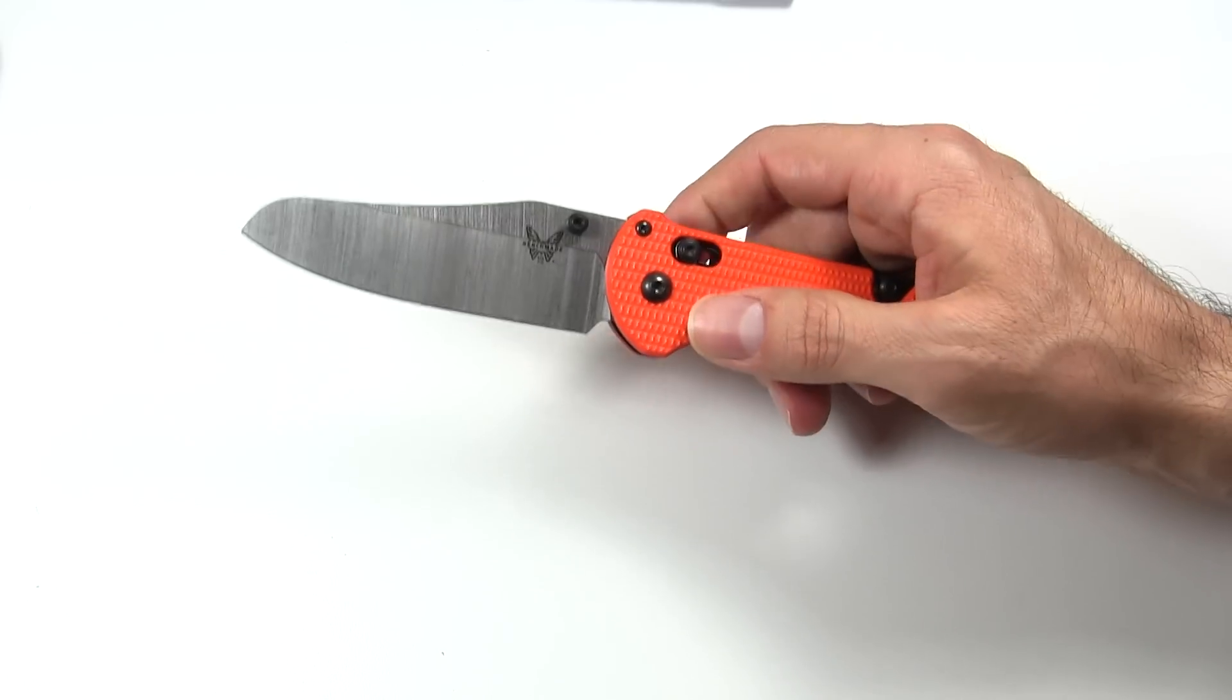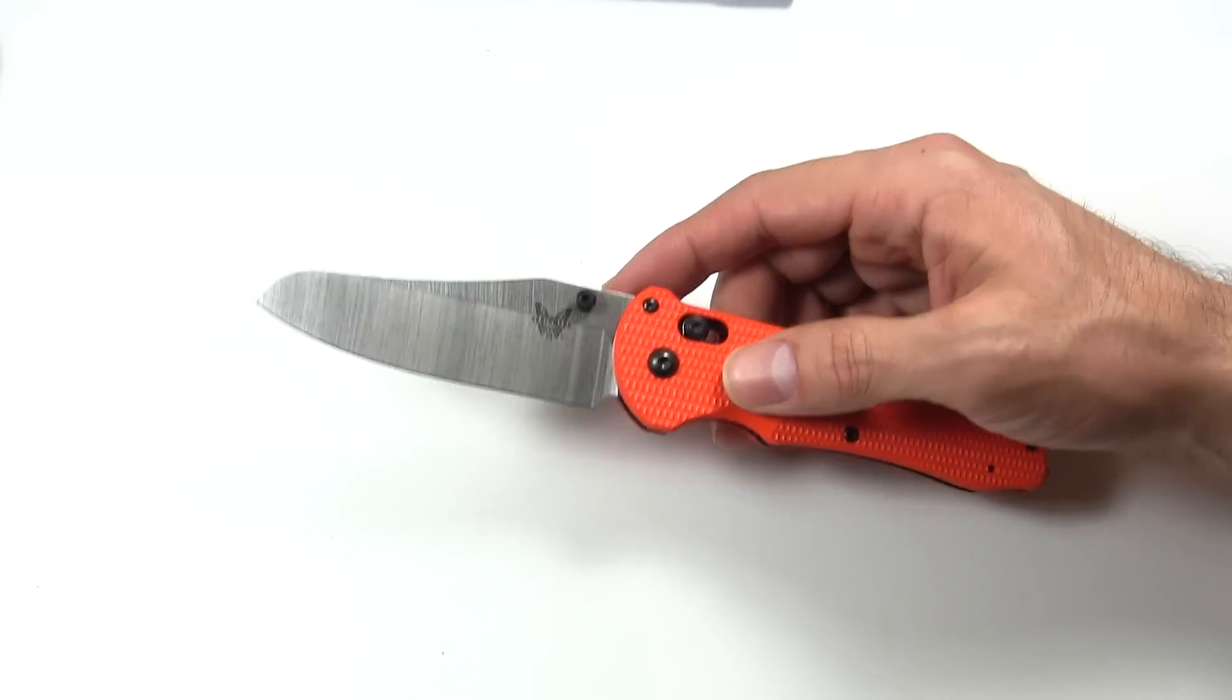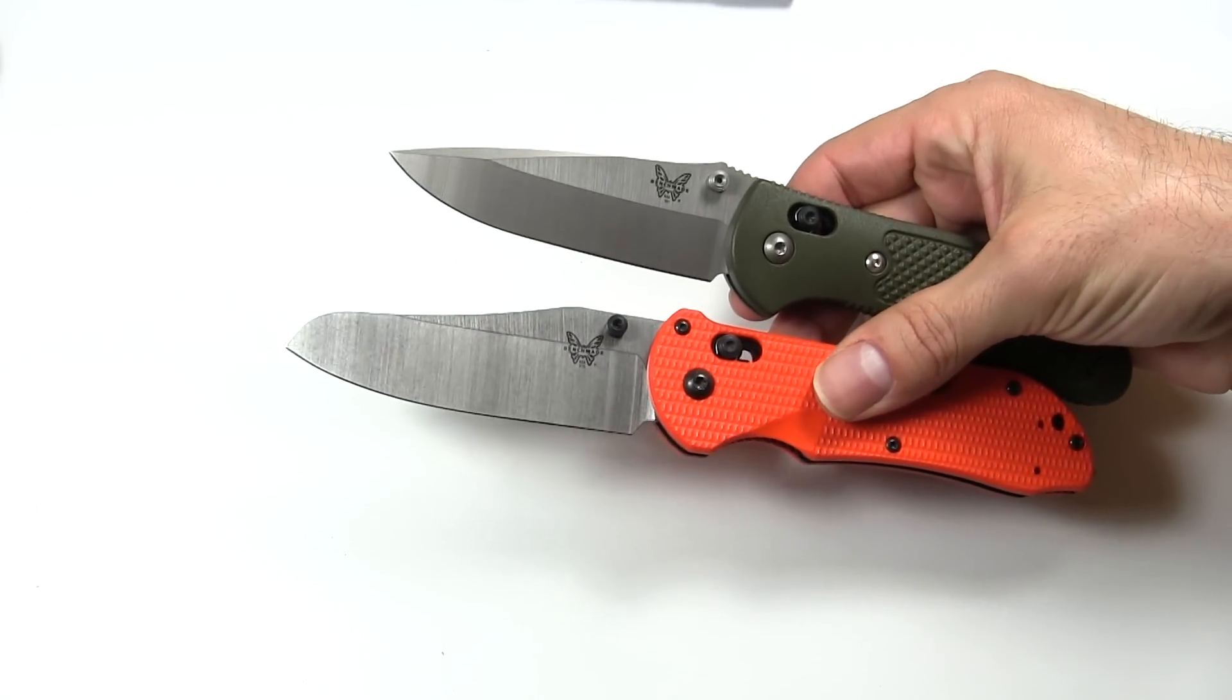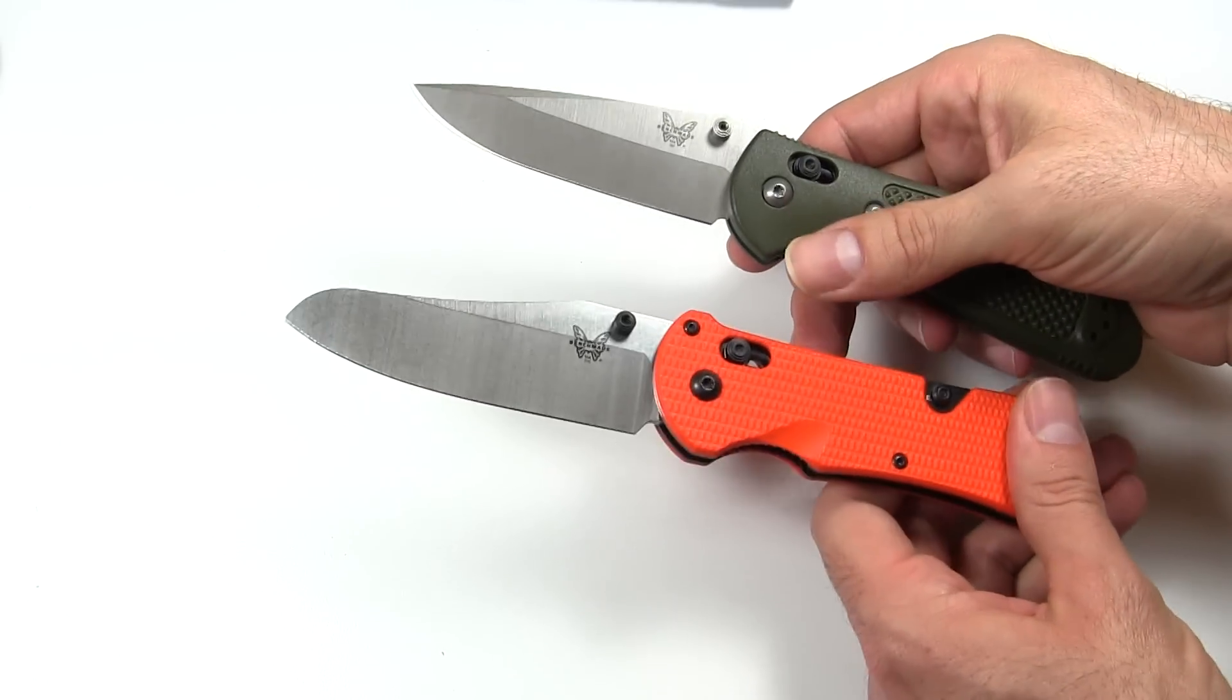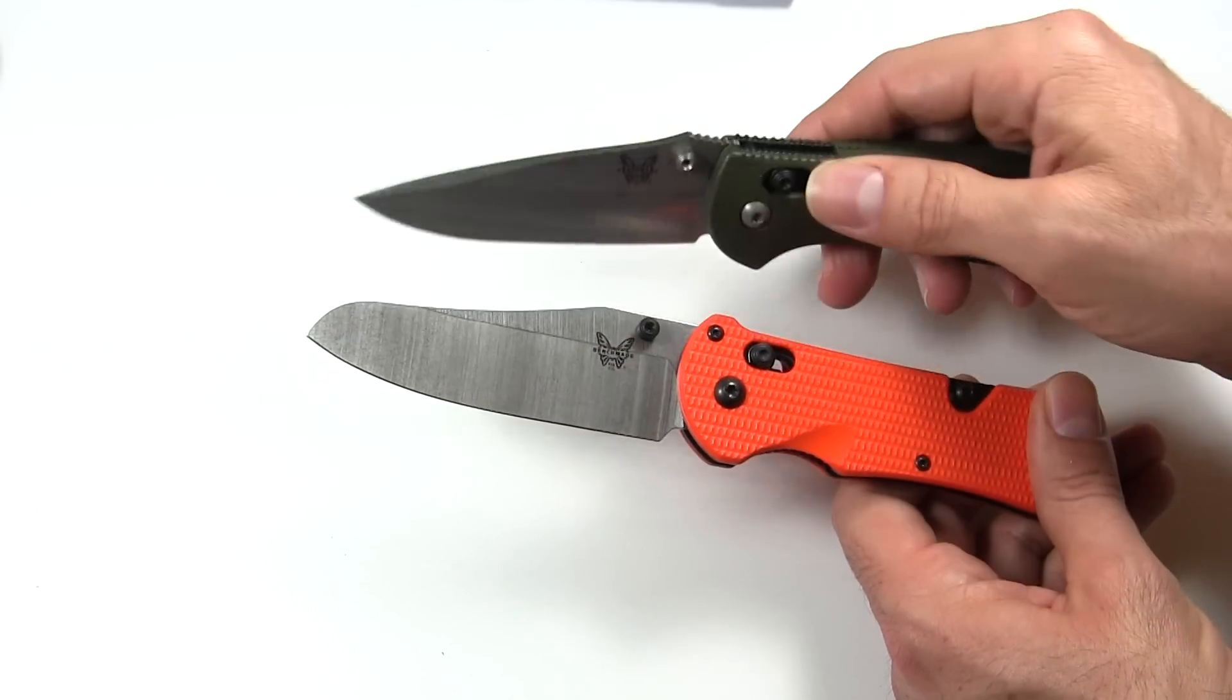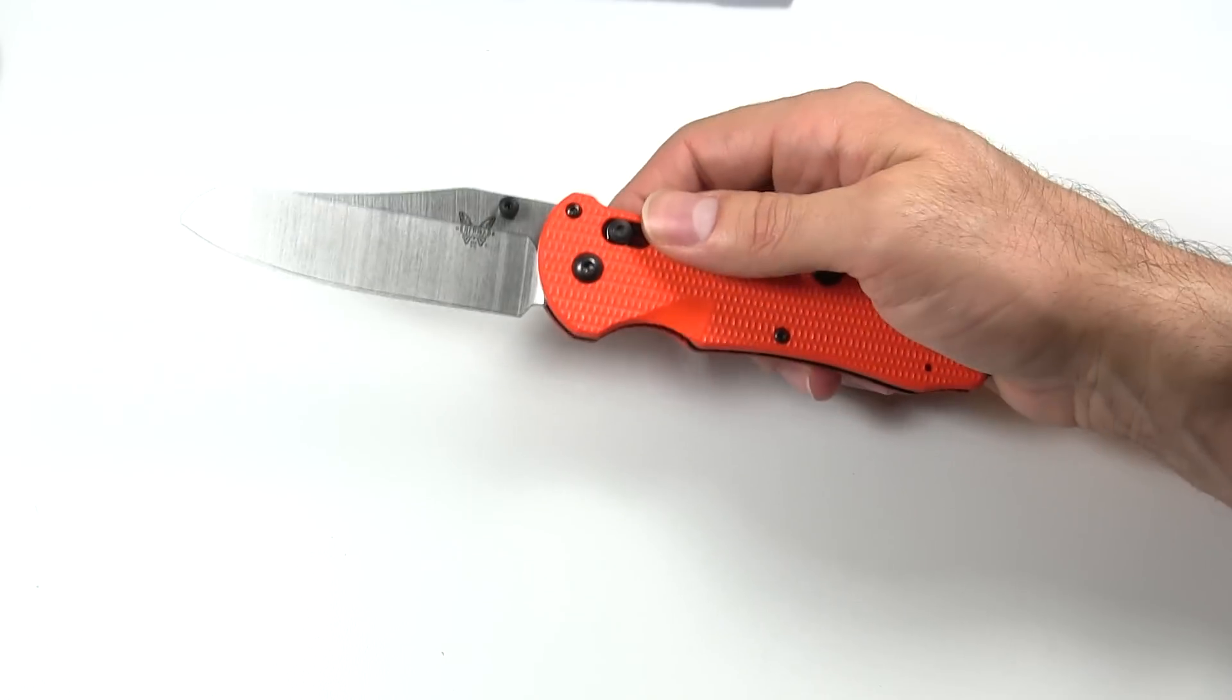So there's the blade. It is a modified sheep's foot blade. And this is more ideal of a rescue type blade compared to, like, this Griptilian. And reasons for that being, this blade, as you can see, it doesn't really have a big sharp point on it like this Griptilian does. So if you're trying to cut someone out of something, you're going to be a lot less likely to stab them with it. The tip comes down, kind of a rounded tip here. It has a little bit less belly. So a lot more useful for cutting someone out and not cutting them in the process.